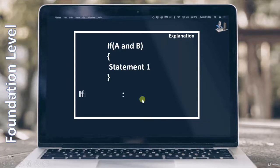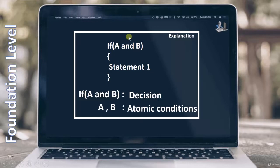So you have already seen this particular example wherein if A and B as a whole is a decision, whereas inside this decision there are two conditions A and B, and individually they are called as atomic conditions. And now if we have to perform decision testing on it, then the whole decision has to become true once and false once.